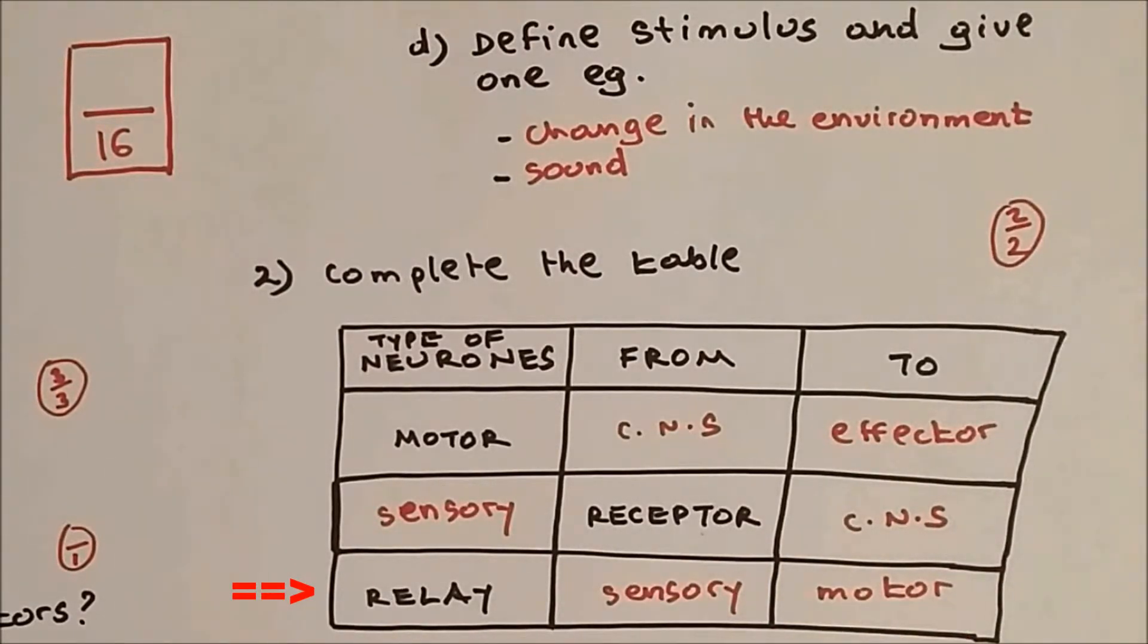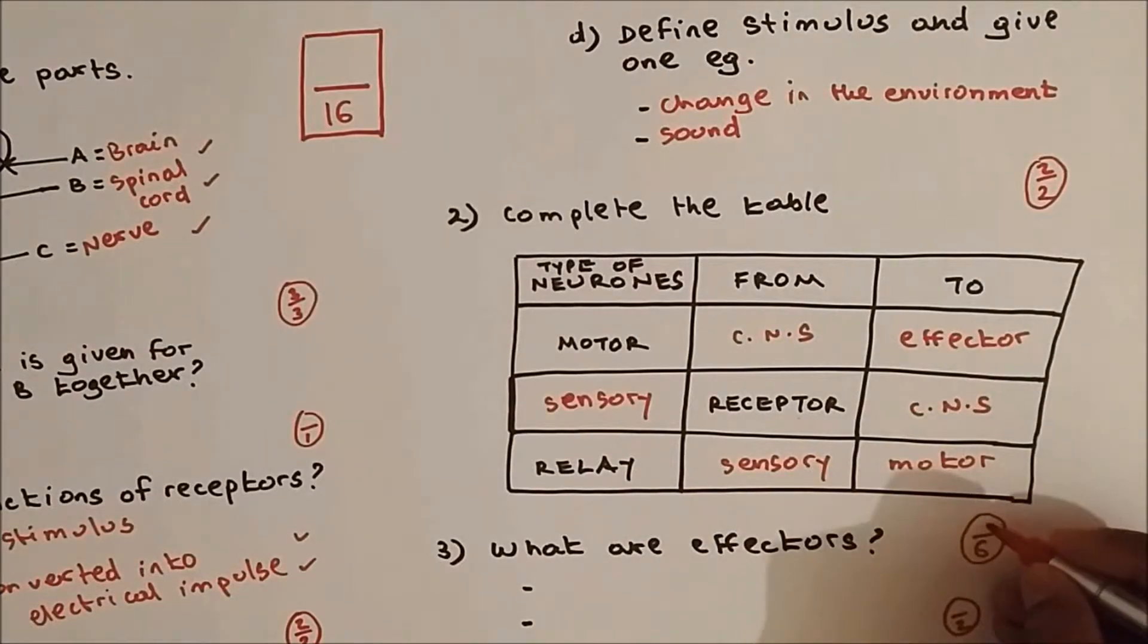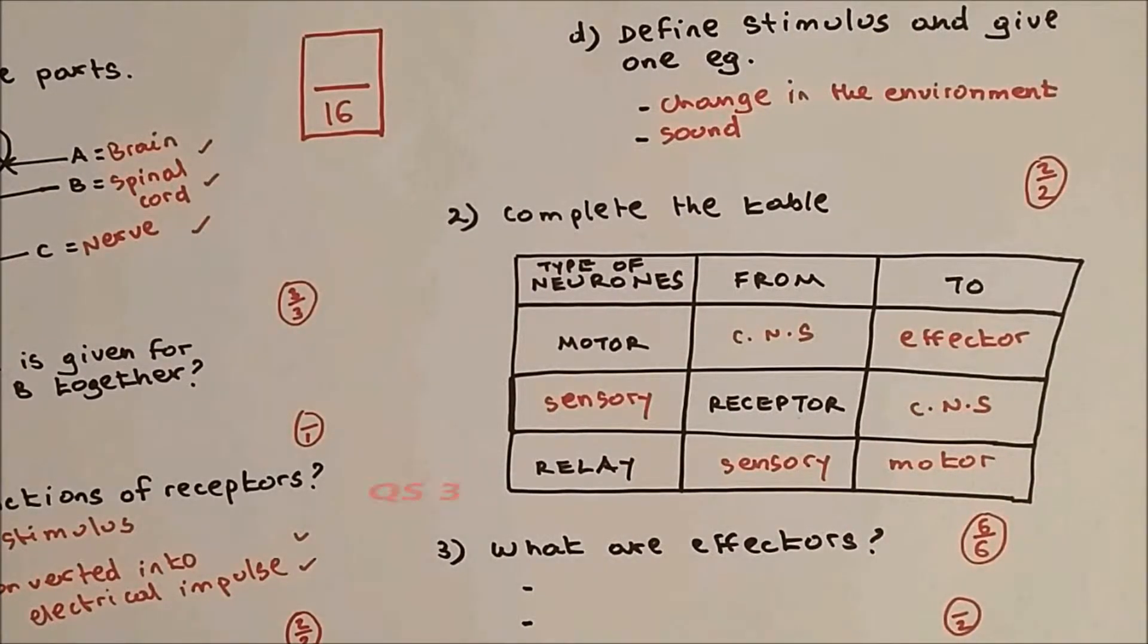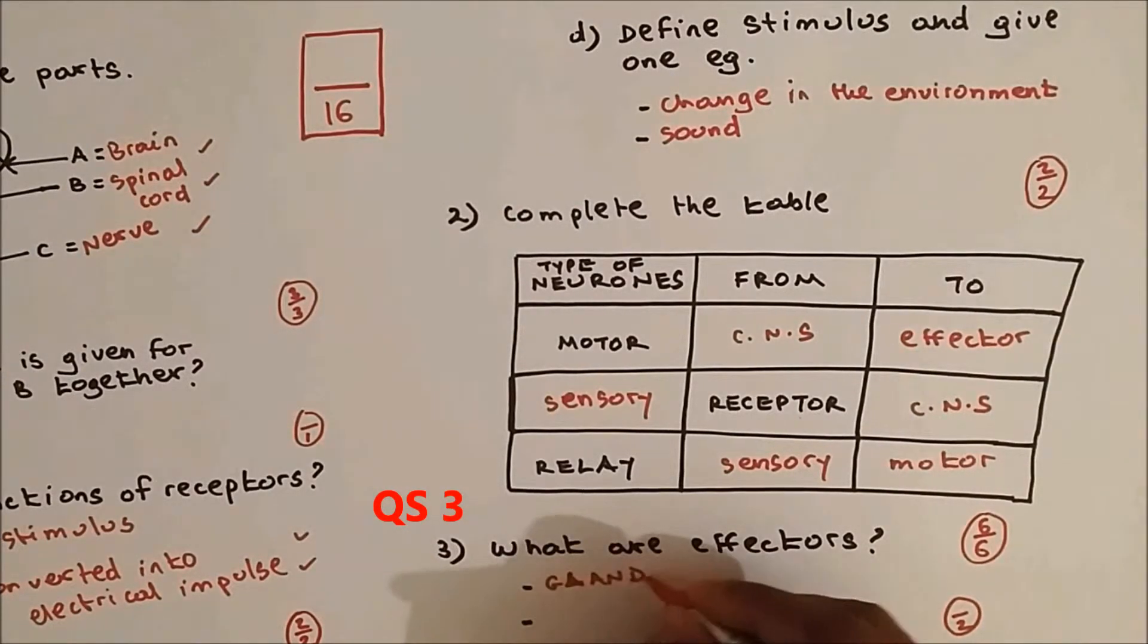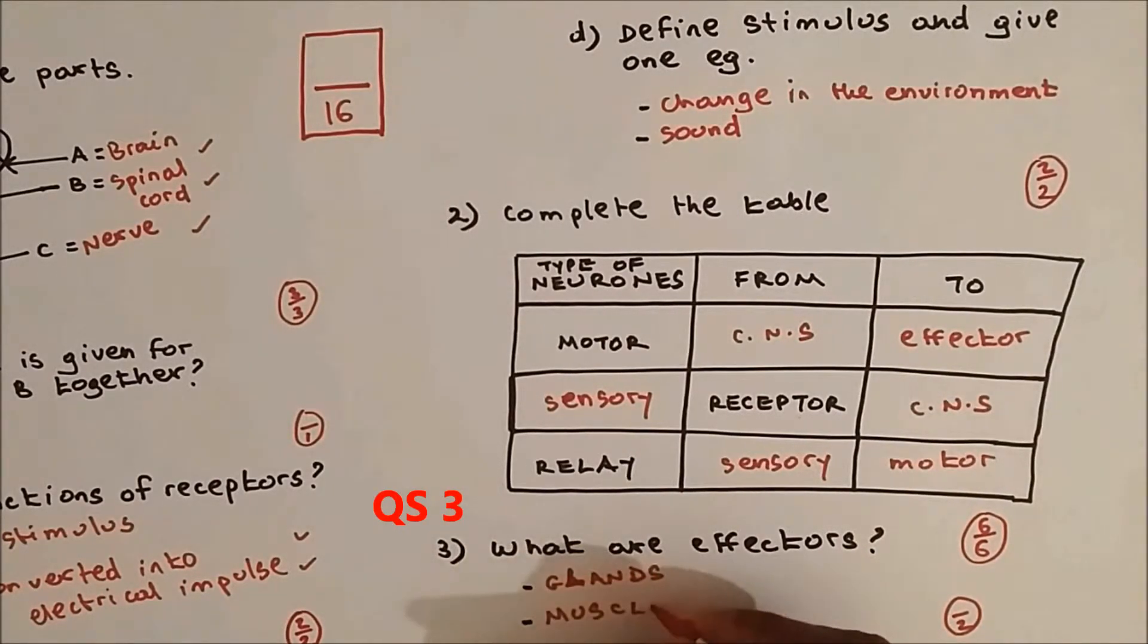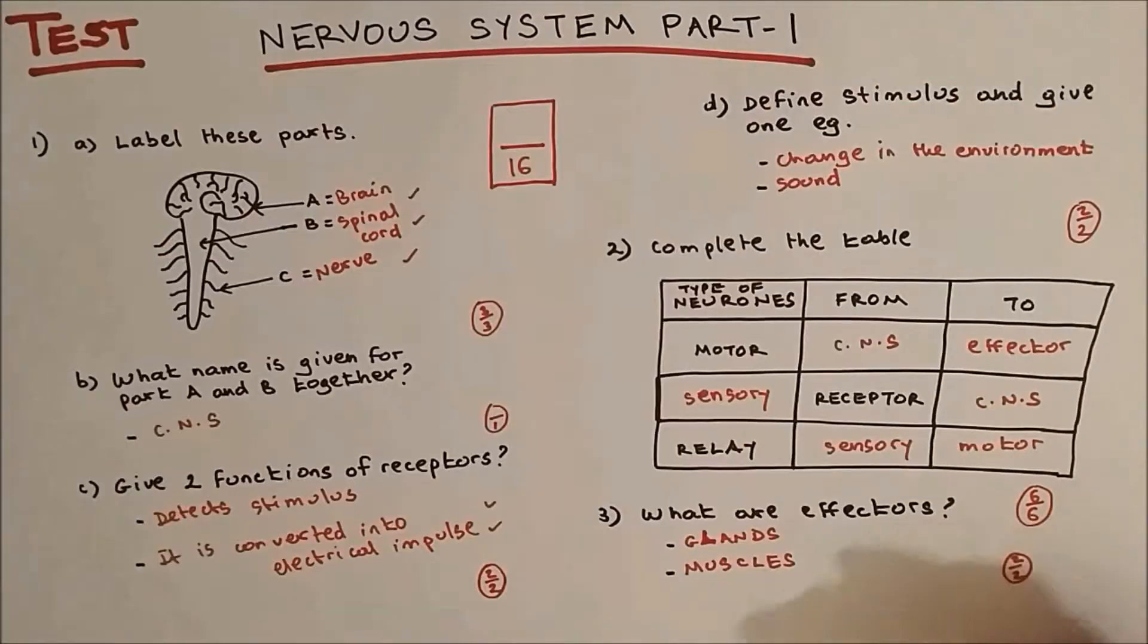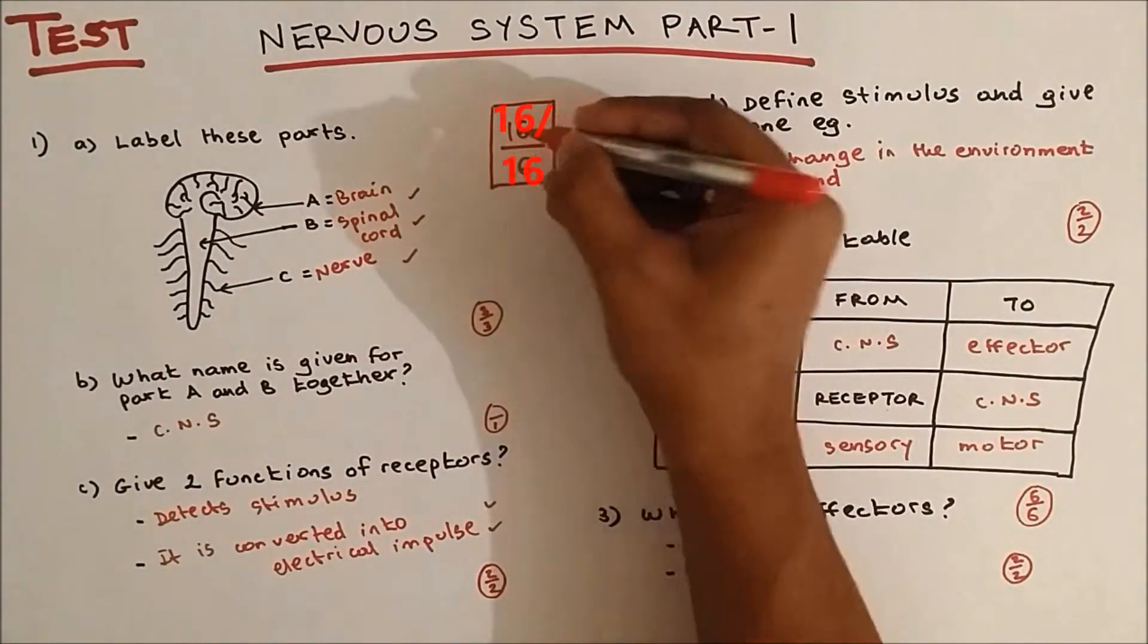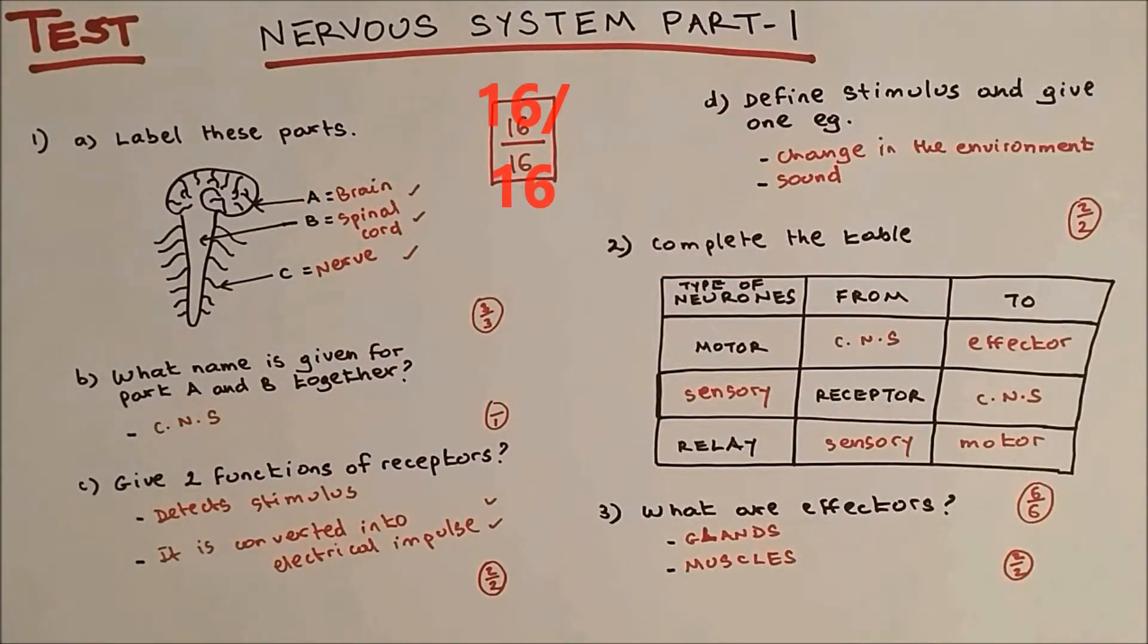Question number three: what are effectors? Effectors are either glands or muscle. Two out of two. Everything adds up to 16. If you got 16, well done.